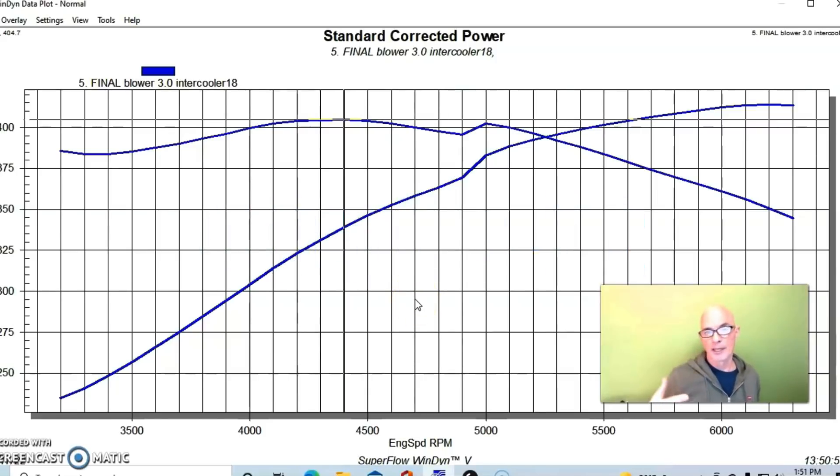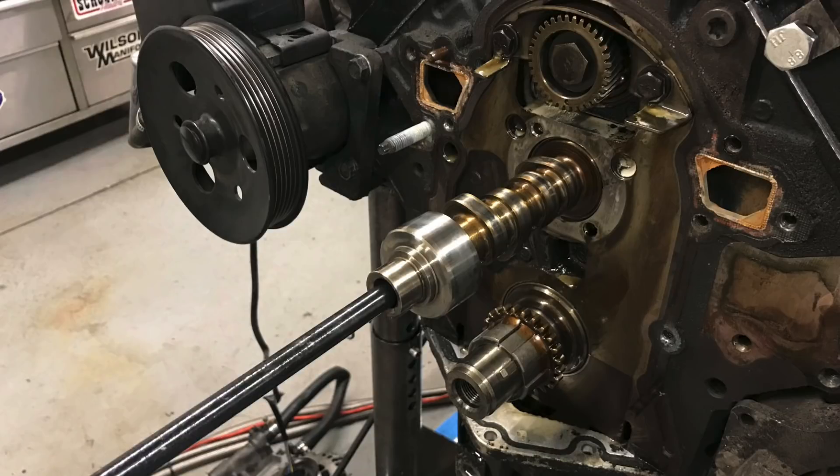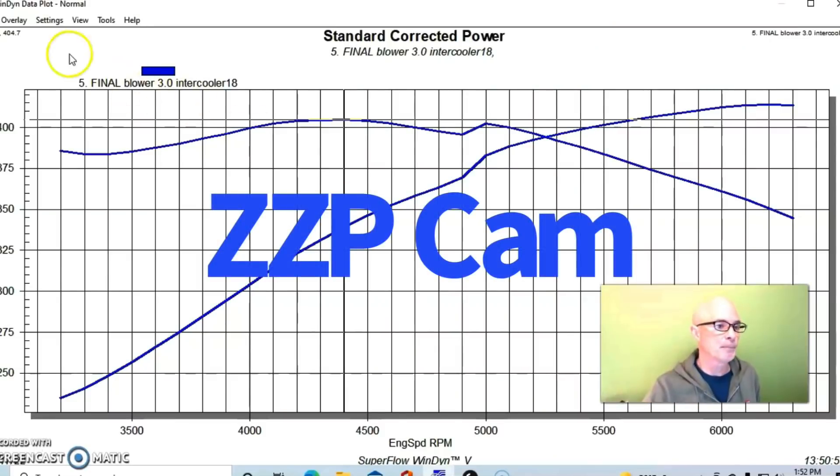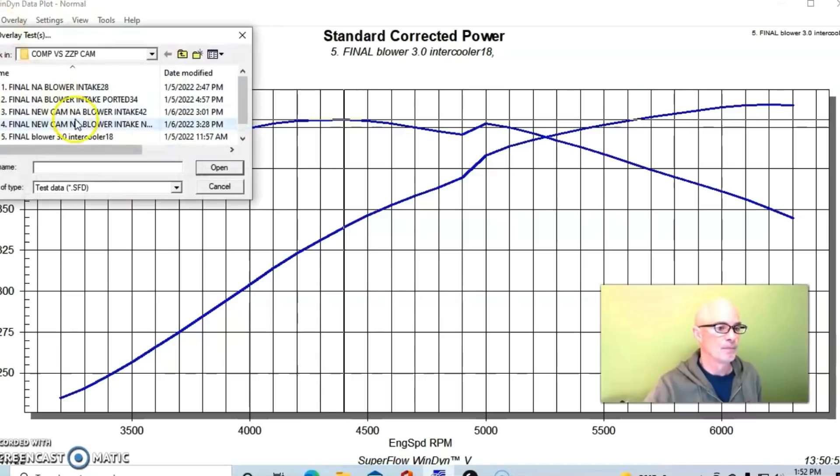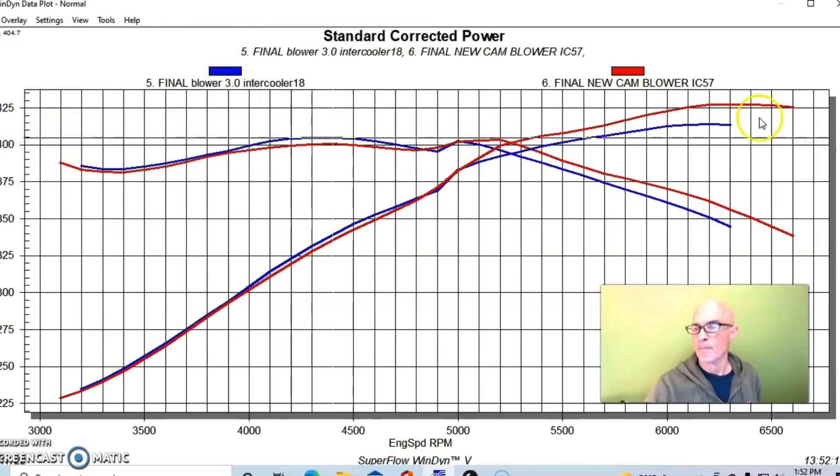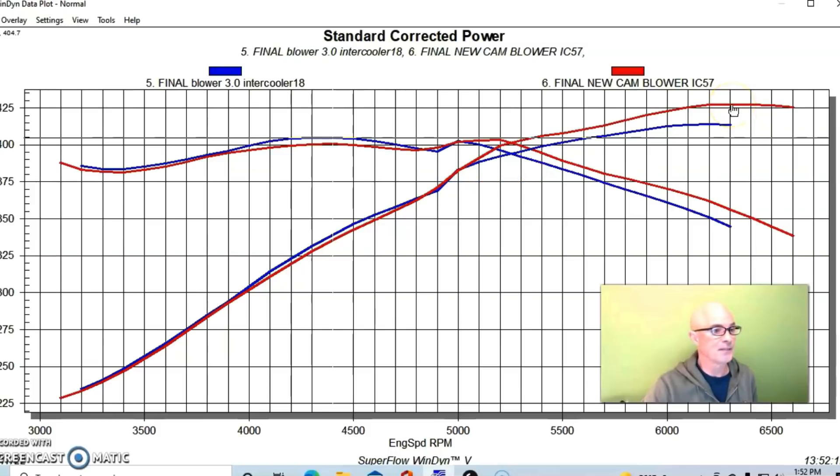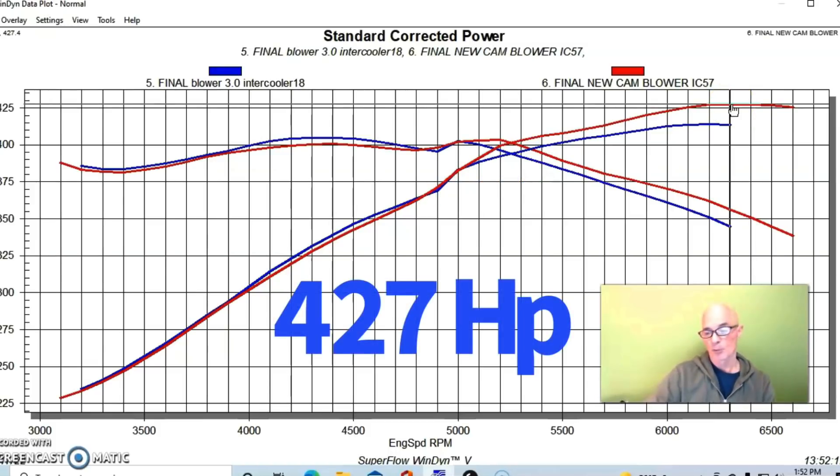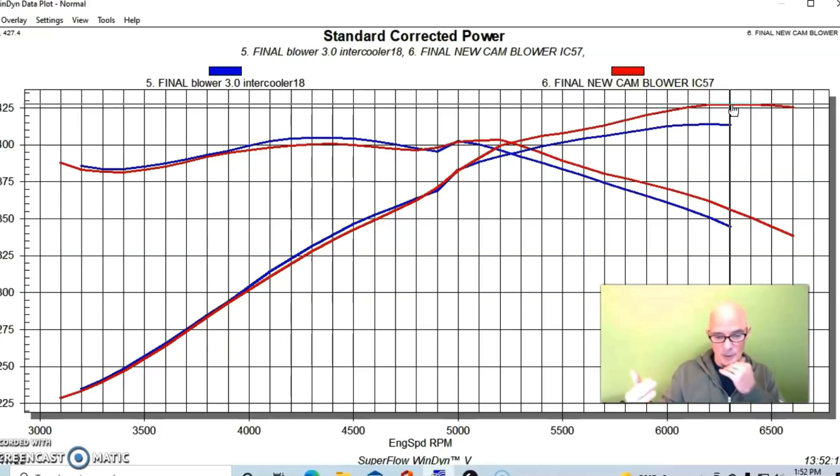And here's what happened after we replaced the mild comp cam, which again was a 210-220 cam with a 220-230 cam from ZZP. The peak power did indeed go up. We saw gains from about 5,100 all the way out past 6,500. The peak power jumped up to 427 horsepower. So just like with our naturally aspirated combination, this cam upgrade netted us about an increase of 13 horsepower. We did see a little bit of a drop in low speed power below 4,800. And the other thing that happened that we're not displaying here is that we did see a drop in boost when we put the ZZP cam in.